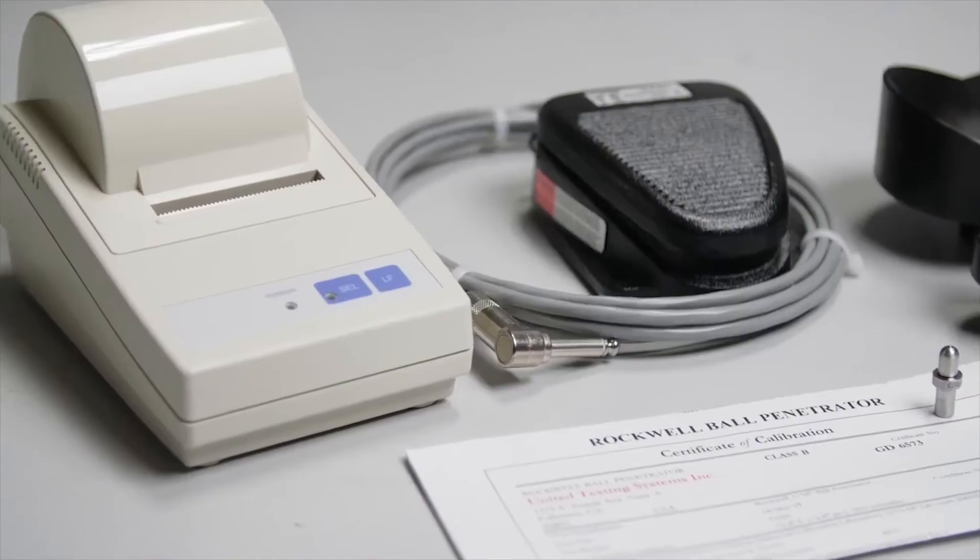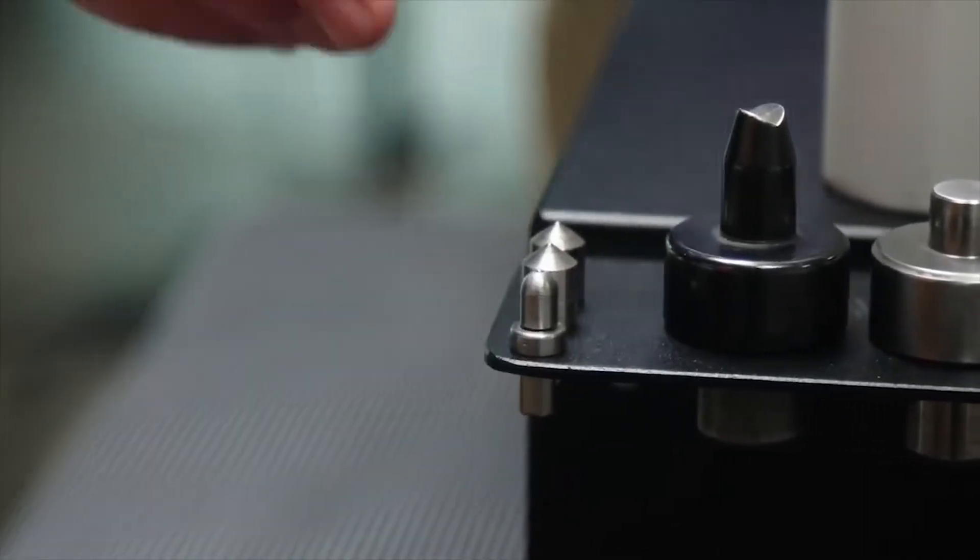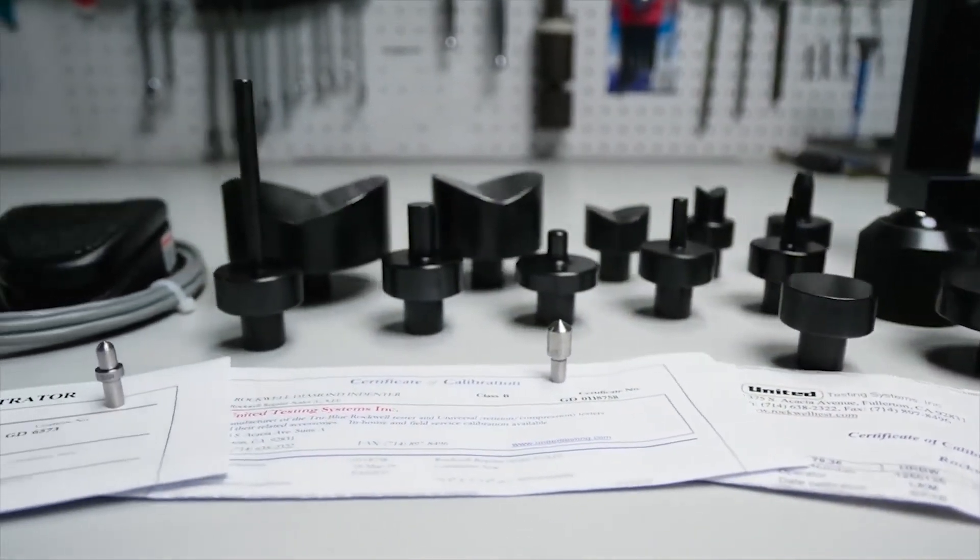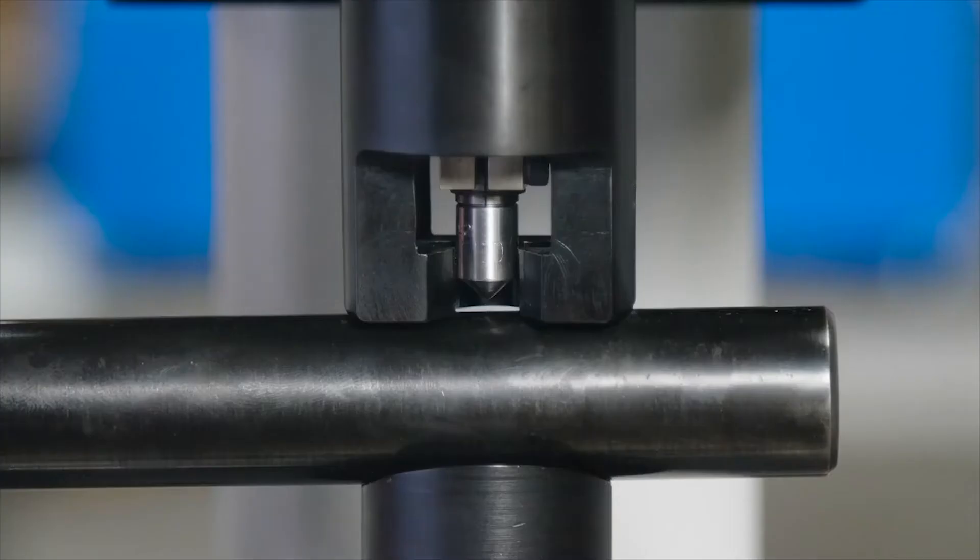United also offers a wide selection of accessories for the True Blue 2 including anvils, ball indenters, diamond indenters, and test blocks as well as a unique clamping system that can be used to secure large parts for testing.